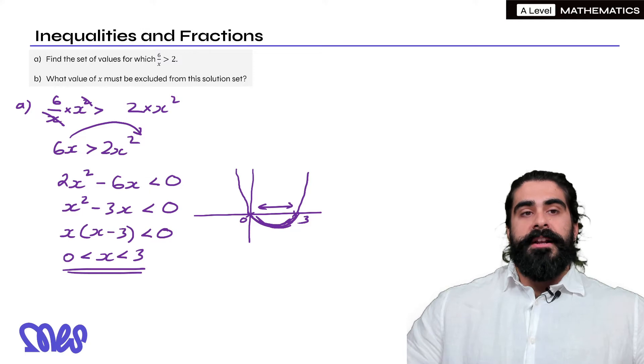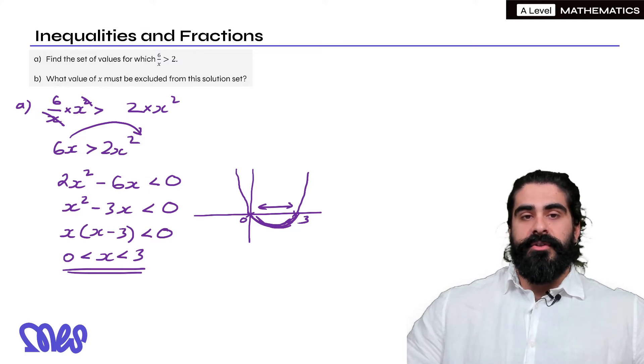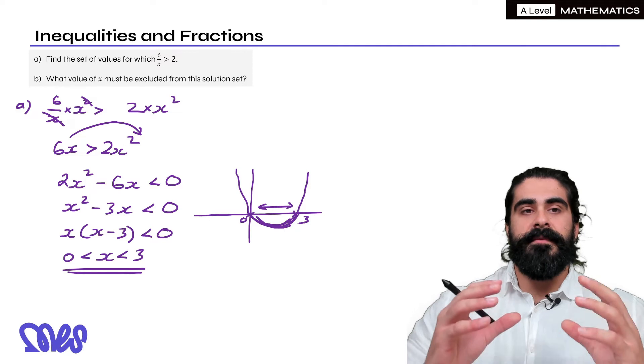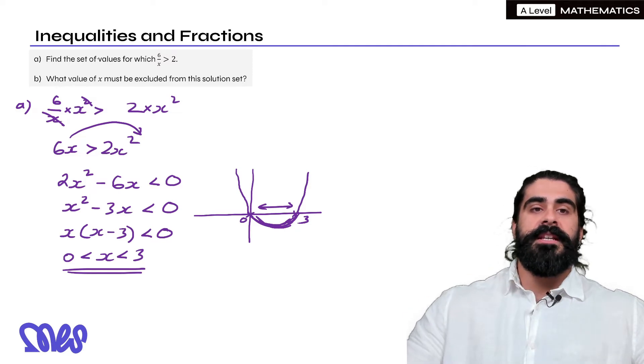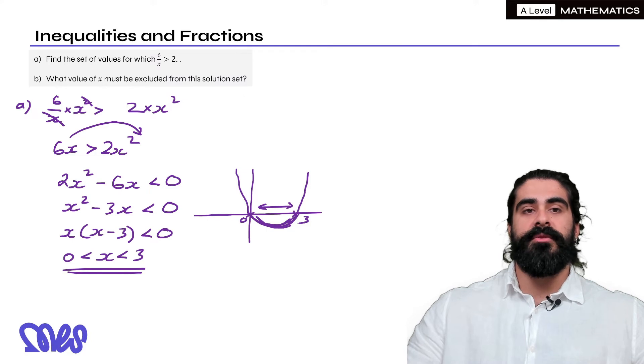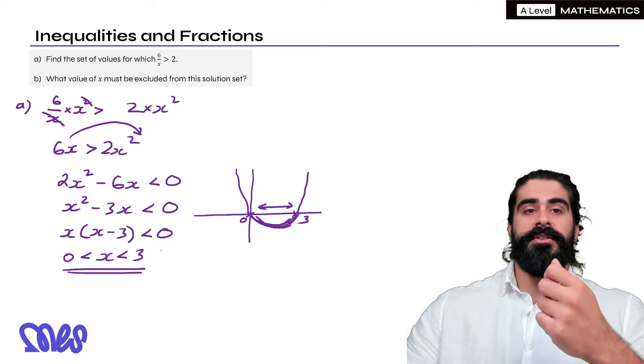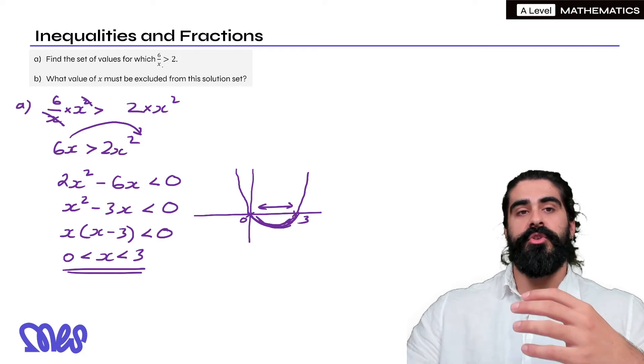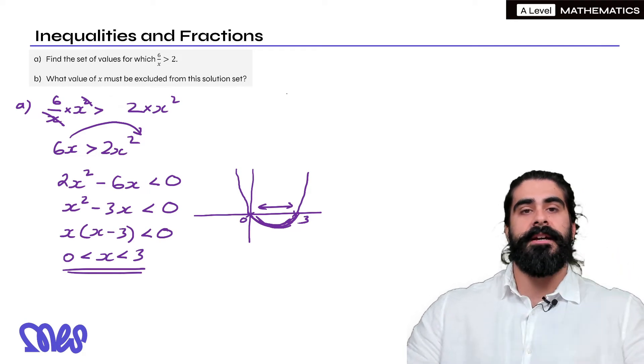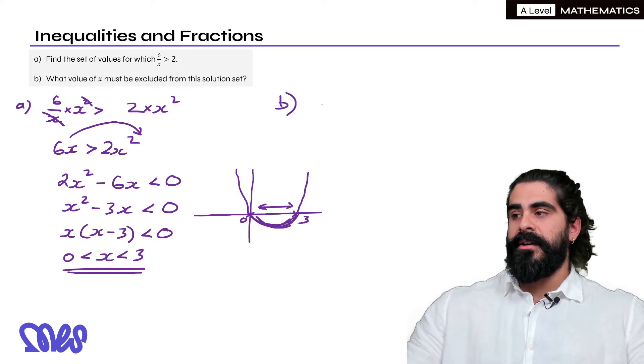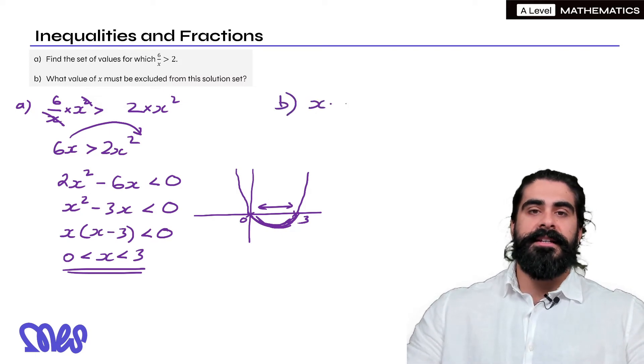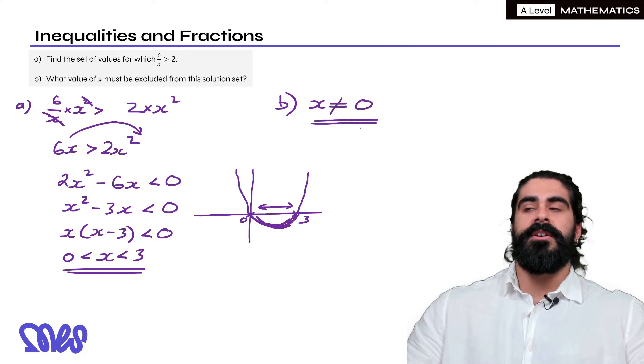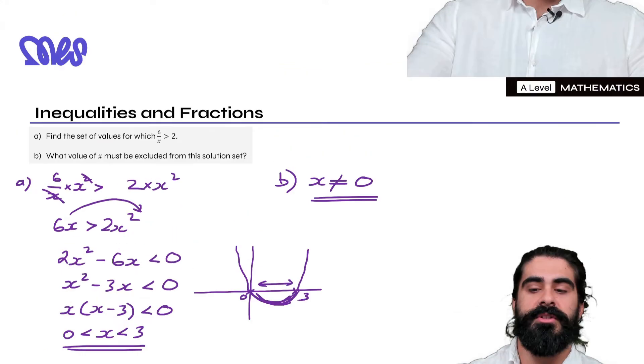Now part b, what value of x must be excluded from this solution set? Now we have to be very careful with these questions. If this was an equal to, so if the question said 6 over x is greater than or equal to 2, then there's one value which we would have included in our answer which we're not allowed and that's 0. Because it's 6 divided by x, we have to make sure that our solution does not include x equals 0. So for part b, all we're going to say is that x cannot equal 0 and that is the only value that we can't include in our solution set.